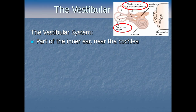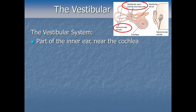The vestibular system is a set of structures found inside the inner ear, right next to the cochlea — that spiral, snail-shell-looking structure. Next to it are some loops, some semicircle-looking loops and a couple other things. Together they make up the vestibular system, which contains sensory receptors that, among other things, help contribute to our sense of balance — sometimes called equilibrioception — and help us stand upright.